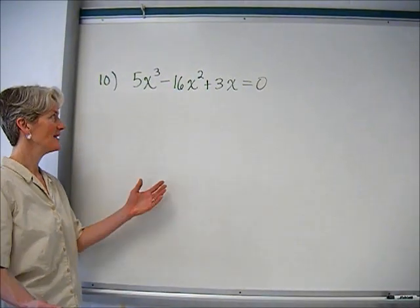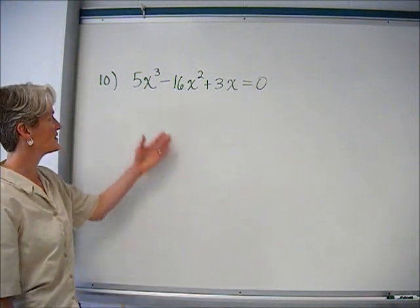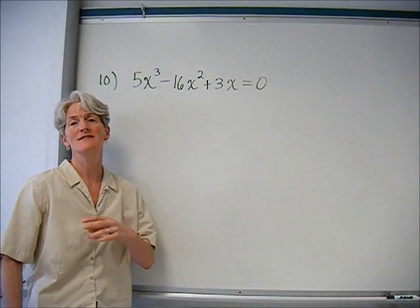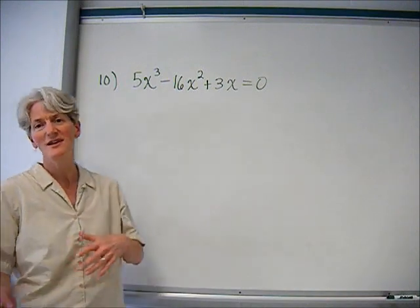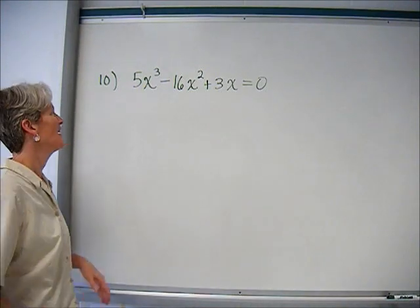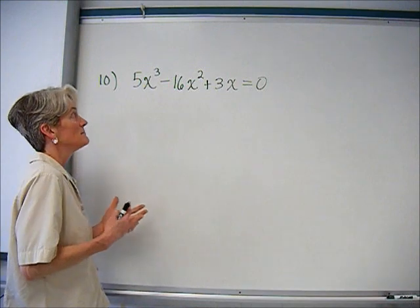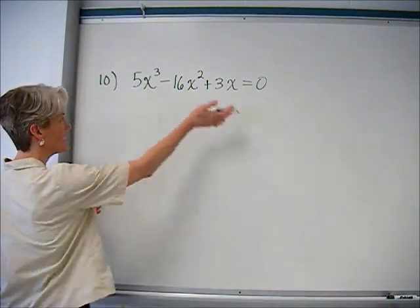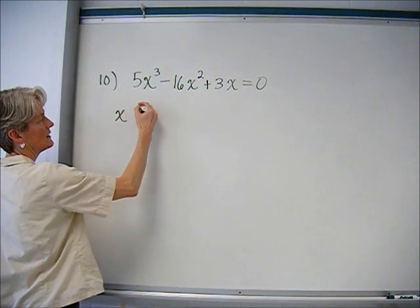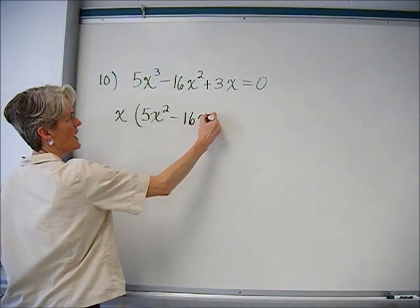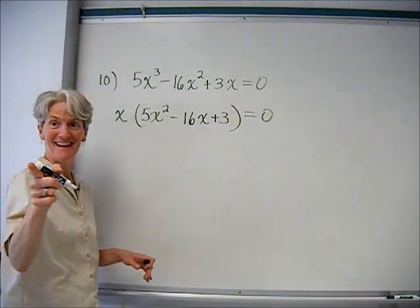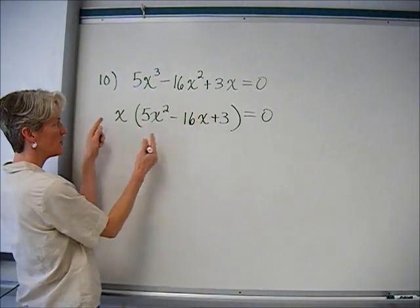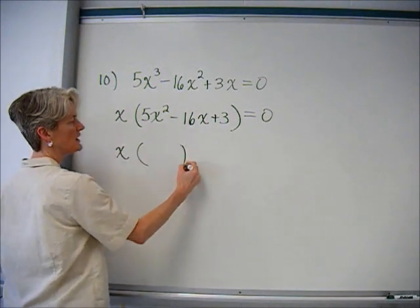Let's solve a cubic. A cubic means I'm going to have probably three solutions — in fact, exactly three, though one might be imaginary or some could be the same. I think this one actually has three distinct answers. I'm going to factor first. With factoring, you always want to look for your greatest common factor first — students sometimes forget, but these rules still apply. I factored out that x.